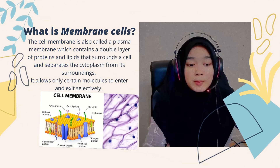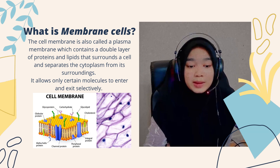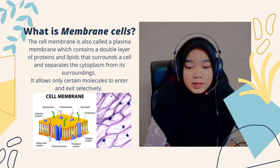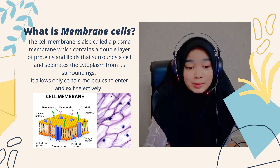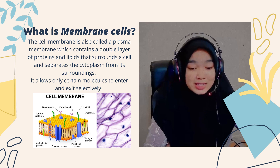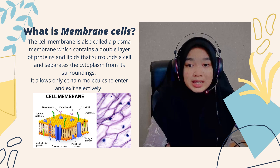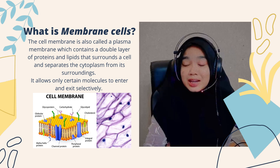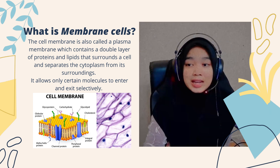Third, we have the cell membrane. What is the cell membrane? The cell membrane, also called the plasma membrane, contains a double layer of protein and lipids that surrounds a cell and separates the cytoplasm from its surroundings. It only allows certain molecules to enter and exit selectively.